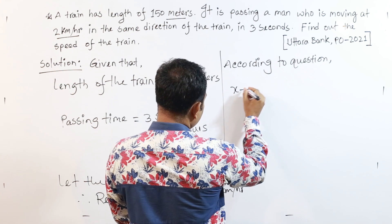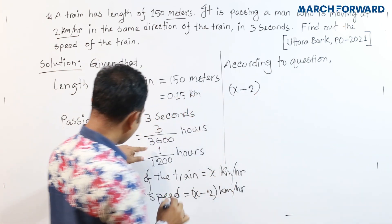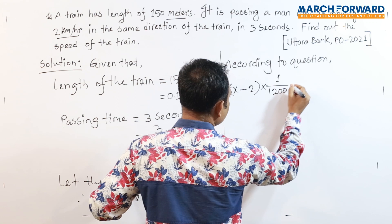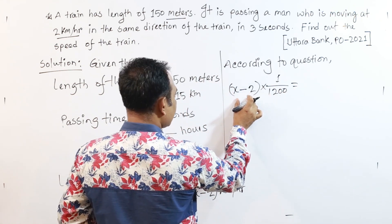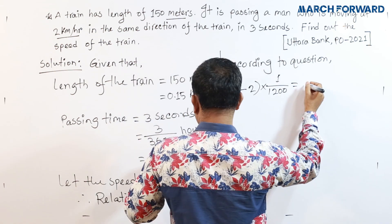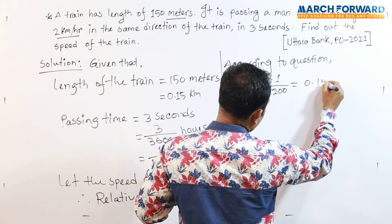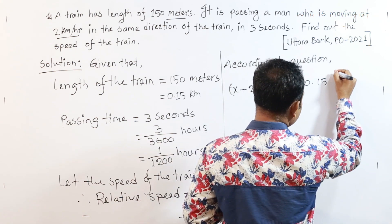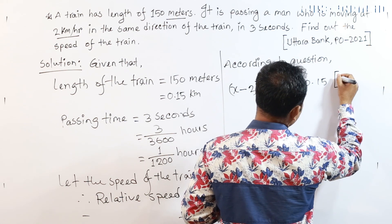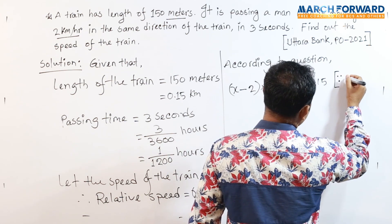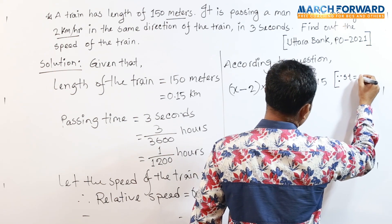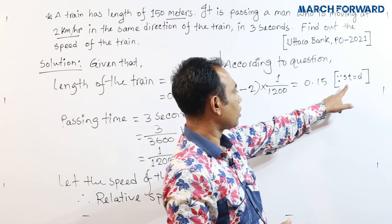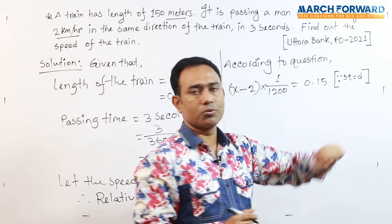Relative speed is the same as relative speed. According to conditions, speed is equal to time. And time is equal to 1 divided by 1200. 80 is equal to 1 divided by 1200. Distance equals 1.15. Time equals distance. Speed into time equals distance.